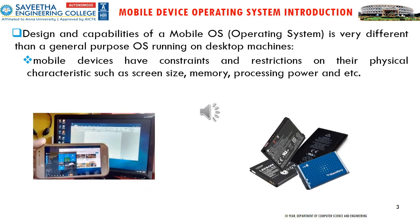The design and capabilities of a mobile OS are very different from a general purpose OS running on desktop machines. Mobile devices have constraints and restrictions on their physical characteristics such as screen size, memory, and processing power. Compared to computers, a mobile phone screen size is very compact and its processing speed is limited.